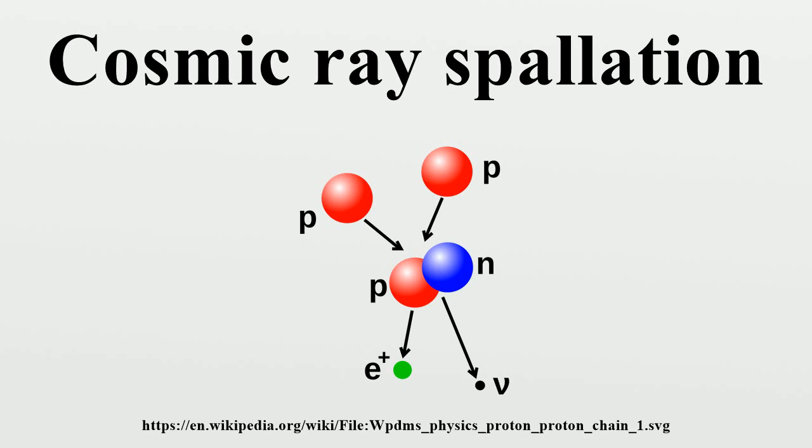As it turned out, spallation could not generate much deuterium, nor could nucleosynthesis in stars. However, the new studies of spallation showed that this process could generate lithium, beryllium, and boron. And indeed, these isotopes are overrepresented in cosmic ray nuclei as compared with solar atmospheres.